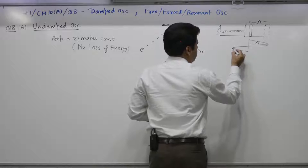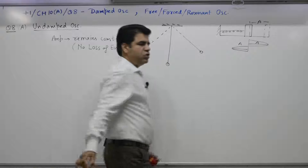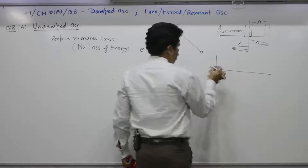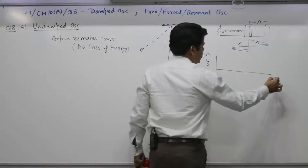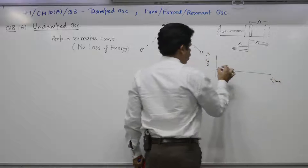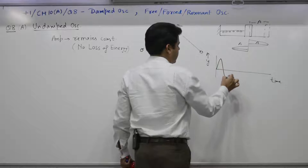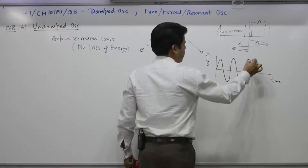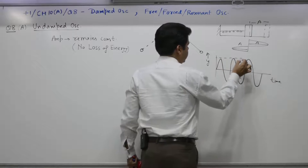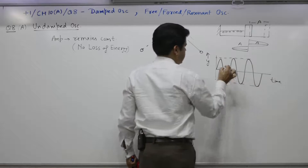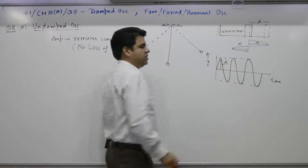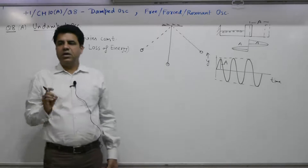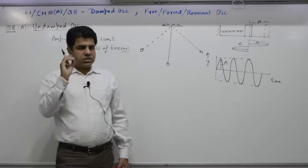That means its amplitude remains constant. How do we draw displacement as a function of time? The amplitude is A throughout — it remains constant with no variation over time. Such an oscillation in which amplitude remains constant is termed as undamped oscillation.